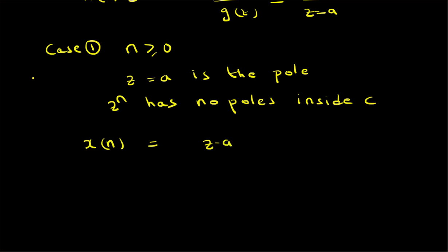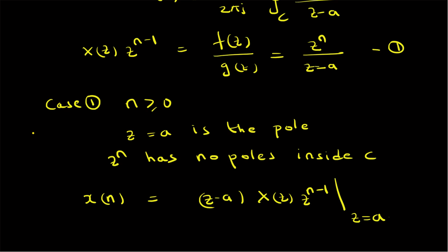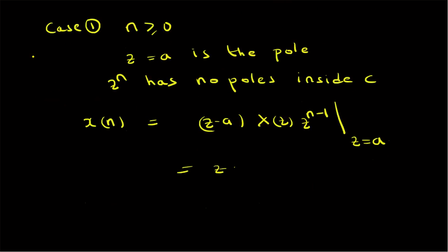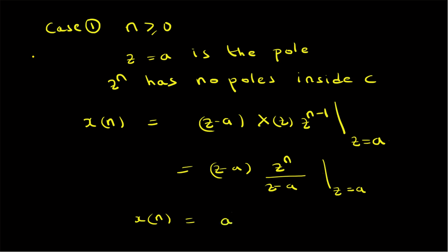Based on the residue formula, x(n) equals (z - a) — the only pole inside C — multiplied by X(z)·z^(n-1), evaluated at z = a. Since X(z)·z^(n-1) = z^n/(z - a), we get (z - a)·z^n/(z - a) evaluated at z = a, which is a^n. So for n ≥ 0, x(n) = a^n.